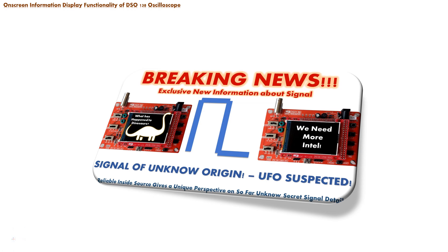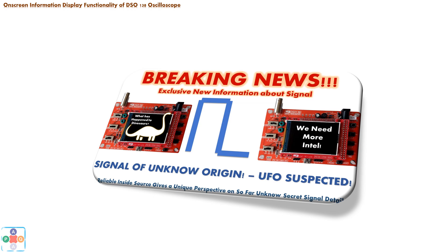In today's video we will talk about the built-in on-screen signal information display functionality of the DSO-138 oscilloscope. In a couple of previous videos we talked about several important parameters of signals — period, frequency, and so on. We learned how to scale a signal to best fit the display, how to measure and determine frequency, period, and amplitude of the signal. Now let's see what the oscilloscope on its own can tell us about the input signal.